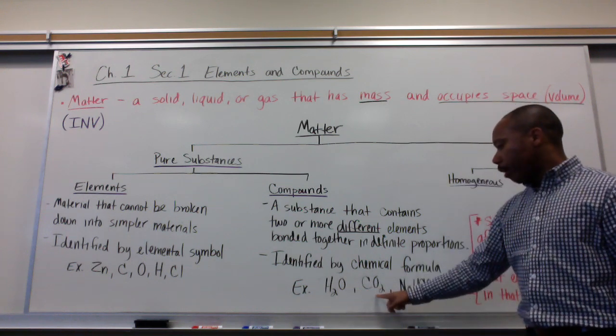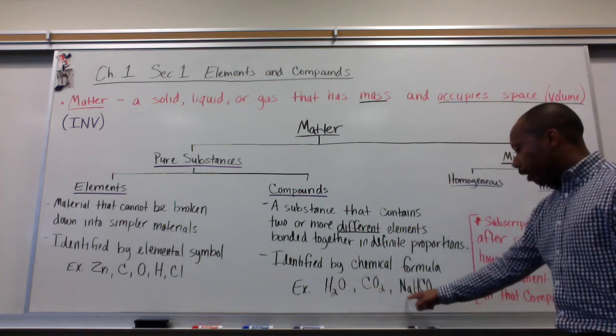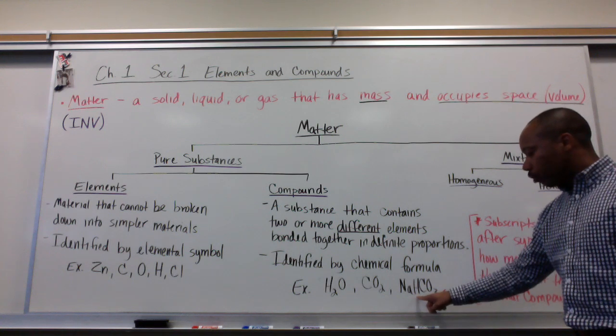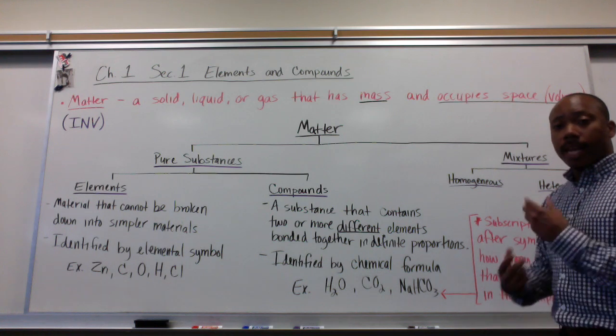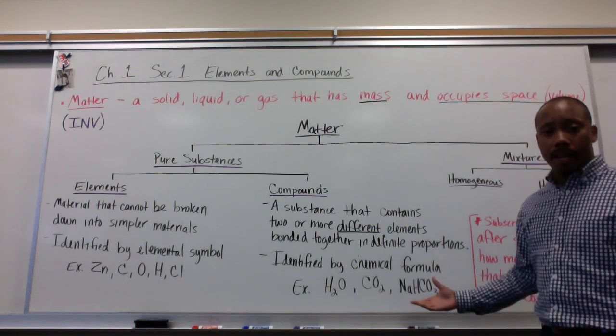For example, we have H and O here together in what we know as a chemical formula. That's H2O, it's water. We have C and O coming together, that's carbon dioxide. We have Na, one element, H, another element, C, another element, O, another element, all coming together to make a compound called sodium bicarbonate.